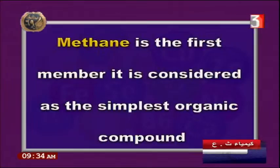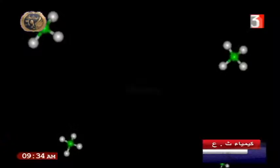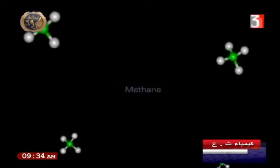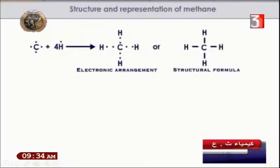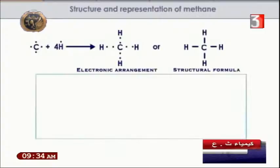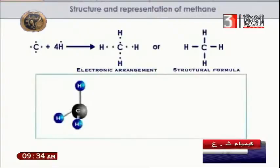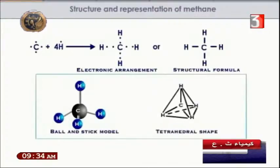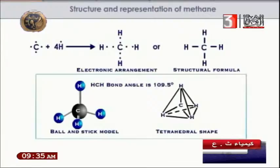Methane is the simplest organic compound — it has one carbon. Carbon has four electrons, and each of the four hydrogen atoms contributes one electron, forming four single bonds. This gives methane a tetrahedral shape in space, with a constant bond angle of 109.5 degrees.